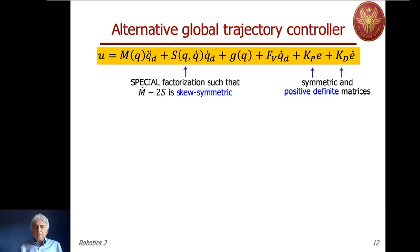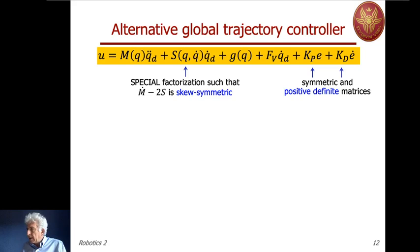There are a couple of assumptions we have made. We assume that in this control law we use a special factorization of the Coriolis and centrifugal term — namely the one that guarantees that the matrix M-dot minus 2S is skew-symmetric. Since we are using this factorization in the design of the control law, we must ensure this condition is satisfied. For the PD gains, we use the standard assumption of positive definiteness and, without loss of generality, symmetric gain matrices.